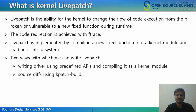The code redirection is achieved with Ftrace. Ftrace is a tool which allows you to trace kernel function calls, but it can also add and remove instructions from functions as well. Livepatch is implemented by compiling the new or fixed function into a kernel module and loading it into the system. Ftrace is then used to redirect calls from the old function to the new function in the kernel module. Two ways to write a Livepatch: first, writing a driver using predefined Livepatch APIs and compiling it as a kernel module; second, source diff using kpatch build.